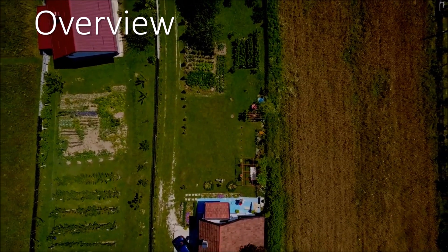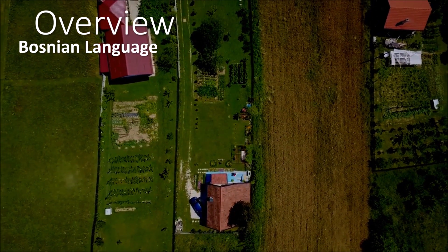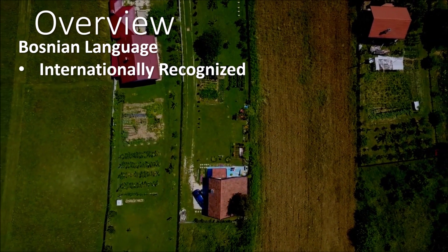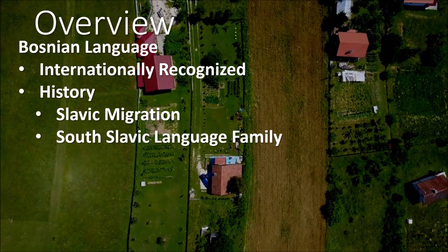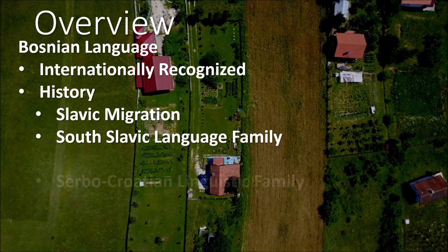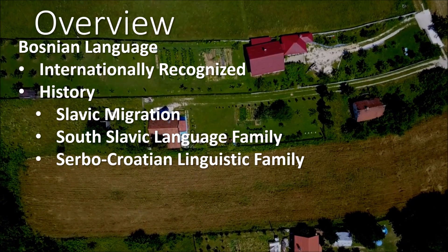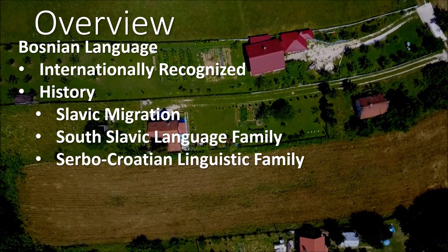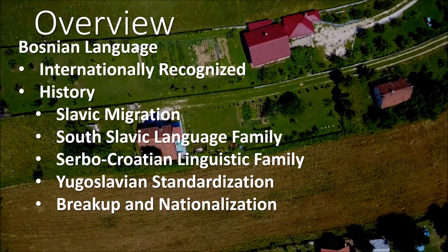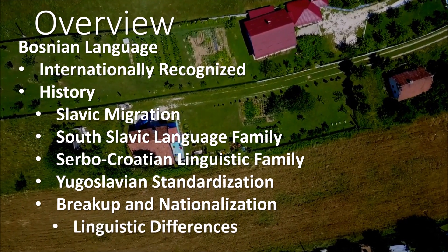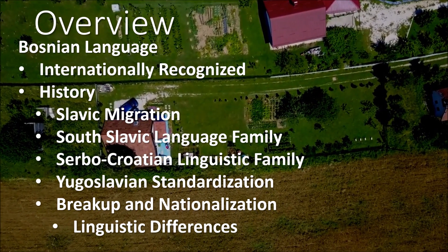Here's a quick overview of what we will be talking about today: the origin of the Bosnian language, its international recognition, history, Slavic migration, the South Slavic language family, the Serbo-Croatian linguistic family and its relationship with Bosnian, Yugoslavian standardization, the breakup and nationalization, and linguistic differences between Bosnian, Croatian, Serbian, and other languages in the region.